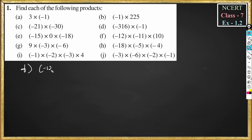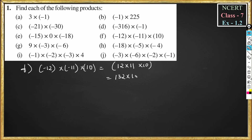Part f: minus 12 into minus 11 into 10. First we multiply the signs: minus into minus is plus, and plus into plus is plus, so the result is a positive number. This becomes 12 into 11 into 10. So 12 into 11 is 132, and 132 into 10 is 1320. The answer is plus 1320.